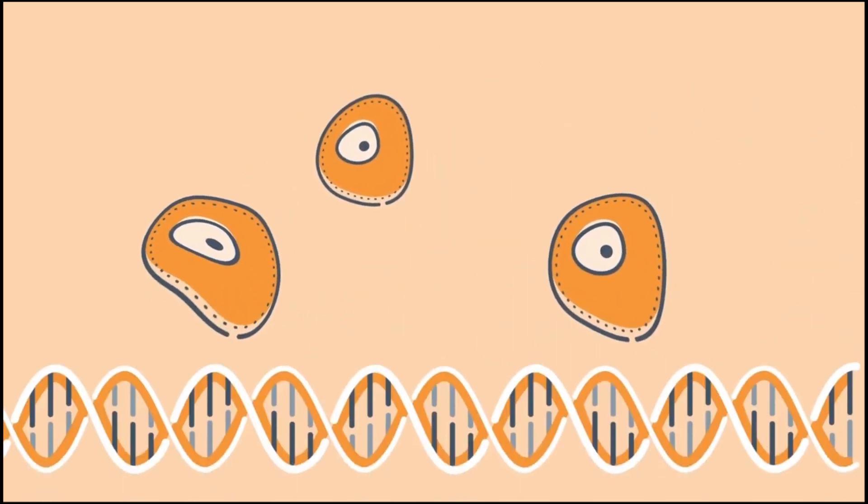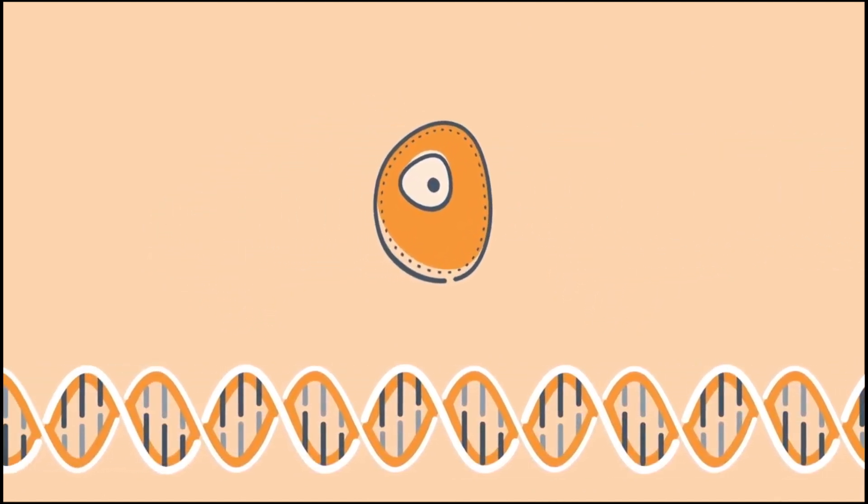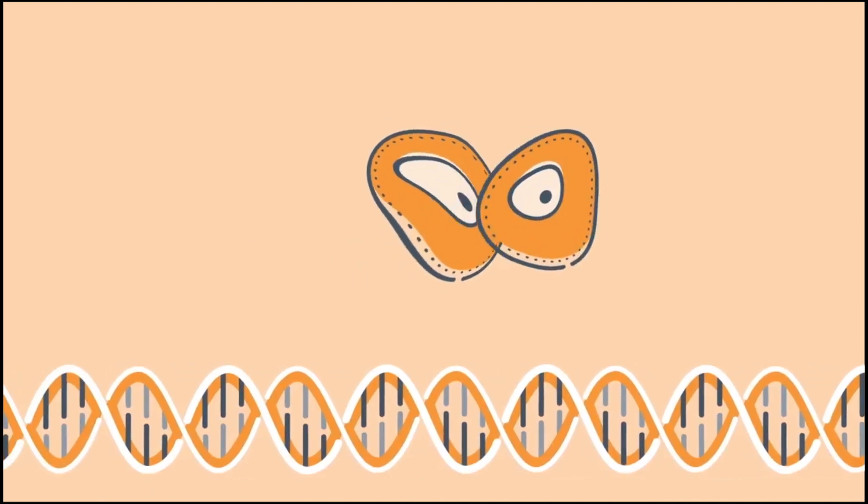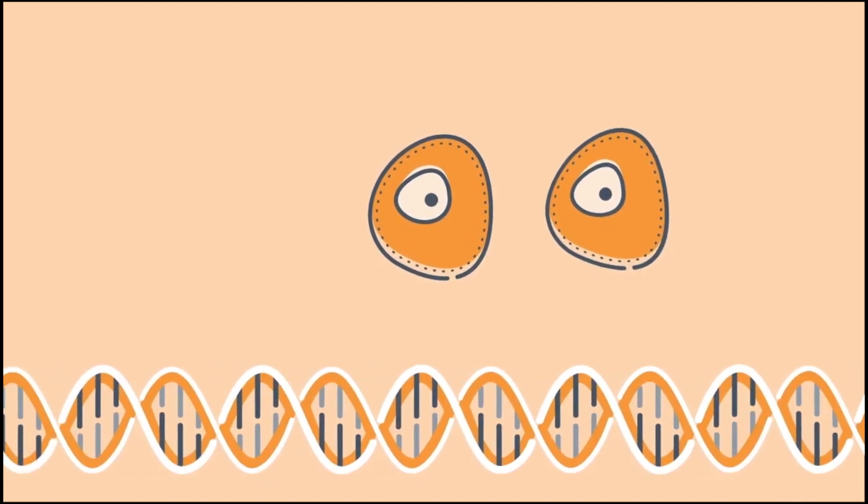When cells divide, they make a copy of their DNA and genes so that each new cell has the same instructions. That copy also divides, and so on, while older or damaged cells are told to die off, making way for new healthy ones.